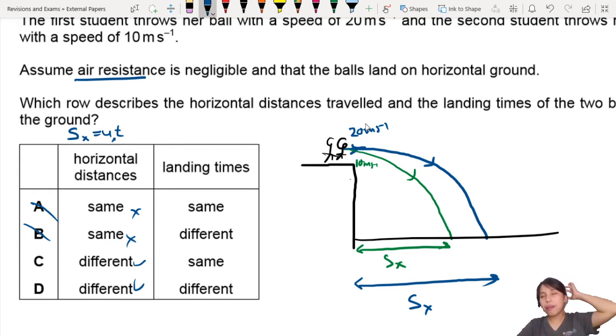Now the landing time depends on the vertical component, not the horizontal component so much. Because what is restricted is, for both of these objects, it depends on how long an object takes to go from this height to the ground.